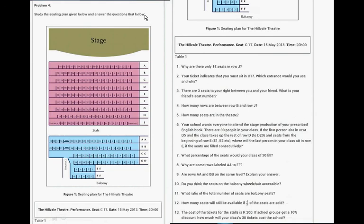Problem Number 4 is a seating plan, and here it is. It's a seating plan for Hillvale Theater. Why are there only 18 seats in row J? There's row J. Your ticket indicates that you might sit in C17. Which entrance will you use? There are three seats on your right between you and your friend. What is your friend's number? That's C17. How many rows between B and J? How many seats in the theater?